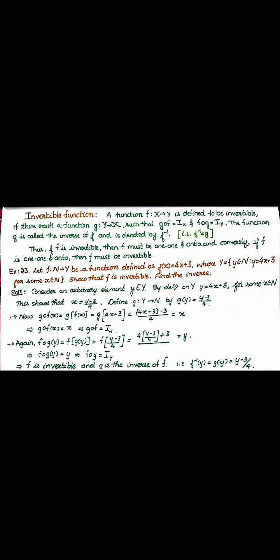Now find f composition g of y, that is f of g of y equals f of y minus 3 divided by 4. Substituting into f of x equals 4x plus 3: 4 times y minus 3 divided by 4 plus 3. The 4's cancel and the 3's cancel, giving y. Therefore f composition g of y equals y, which implies f composition g equals the identity function I with respect to the range Y.